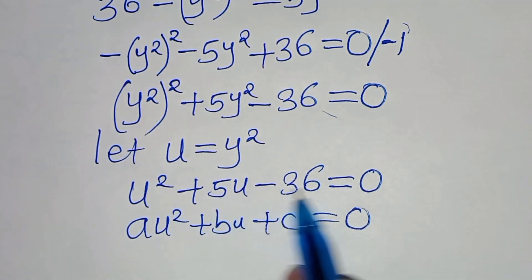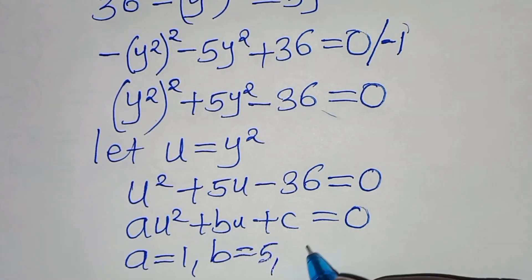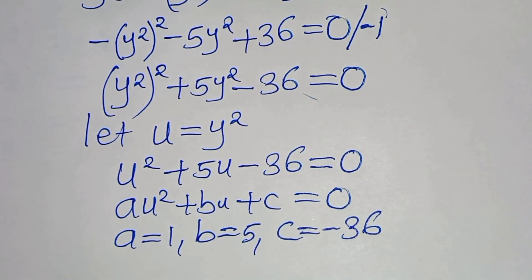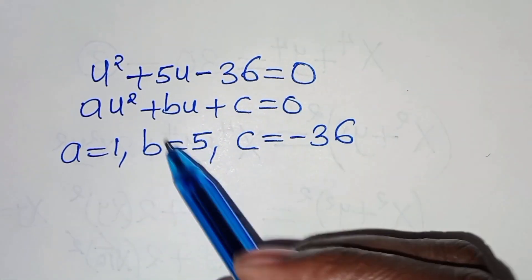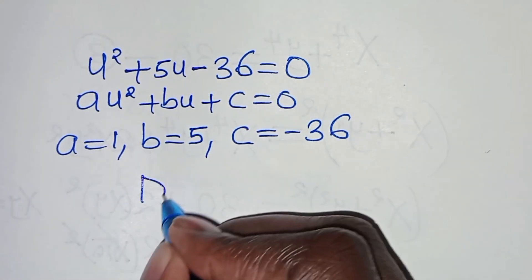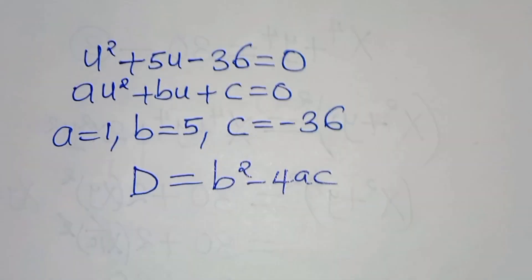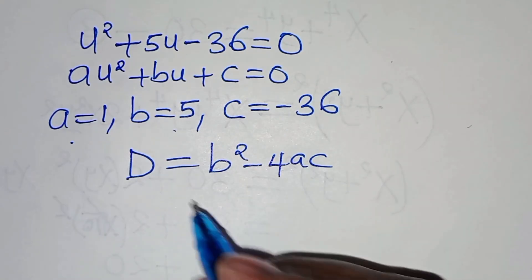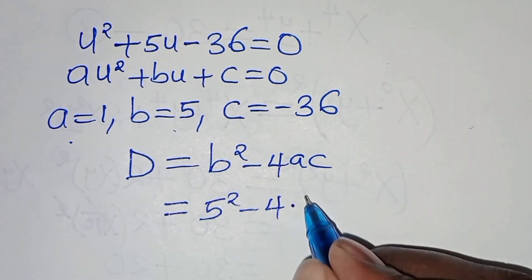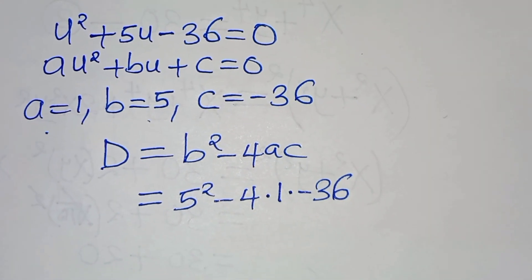From this quadratic equation, we have a equal to 1, b equal to 5, and c equal to minus 36. The next step is to assess the nature of the roots by determining the discriminant value, which is b squared minus 4ac. Let's substitute the values: 5 squared minus 4 times 1 times minus 36.